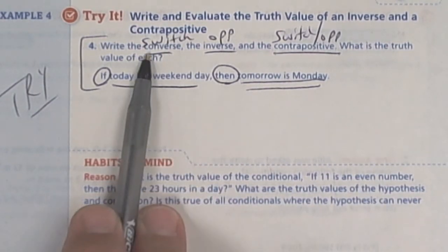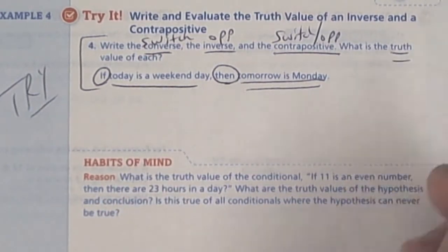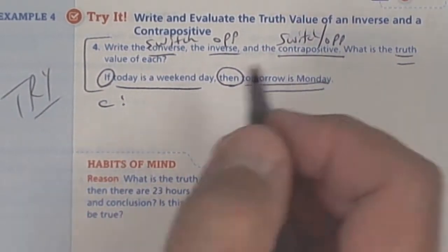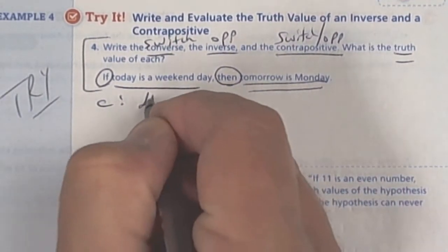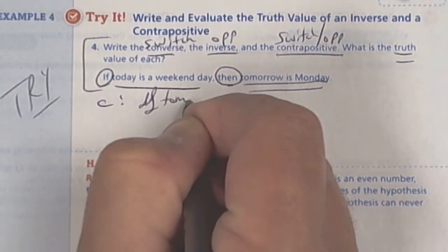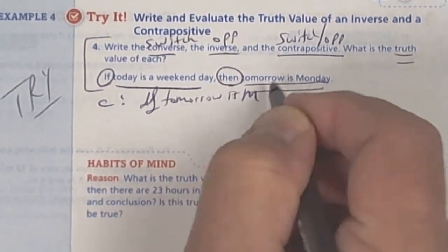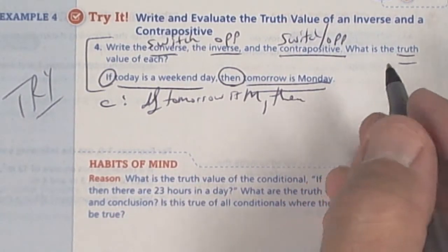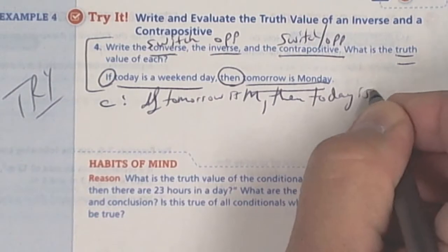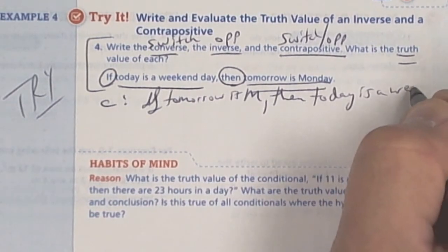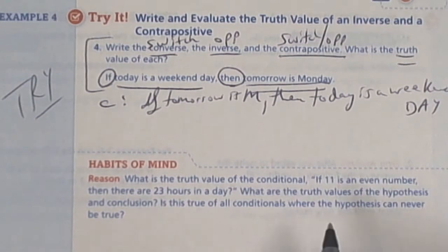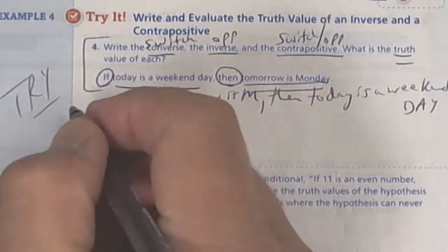So the converse would be, they want the truth value too. So the converse you're going to switch. So you're going to say, if tomorrow is Monday, if tomorrow is Monday, then today is a weekend day. Weekend day. And that would be true. Even if it's Sunday, it's still a weekend day. So that would be true always.